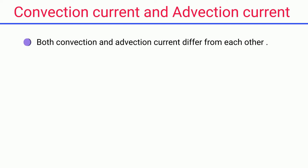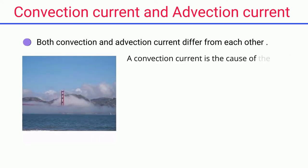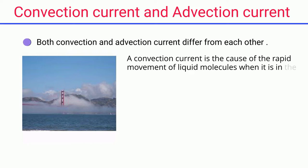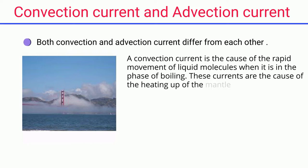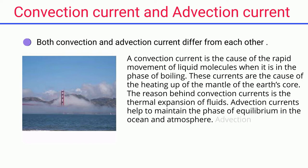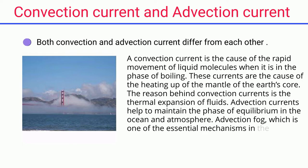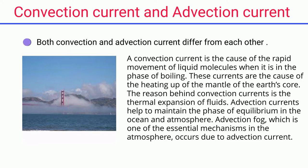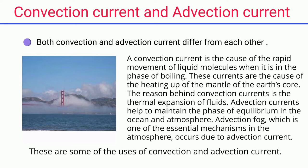Convection Current and Advection Current. Both convection and advection currents differ from each other. A convection current is the cause of the rapid movement of liquid molecules when it is in the phase of boiling. These currents are also the cause of the heating up of the mantle of the Earth's core, driven by thermal expansion of fluids. Advection currents help to maintain the phase of equilibrium in the ocean and atmosphere. Advection fog, one of the essential mechanisms in the atmosphere, occurs due to advection current.